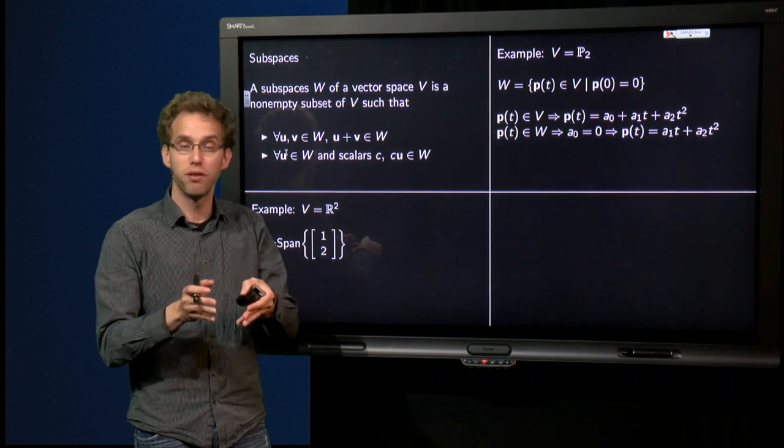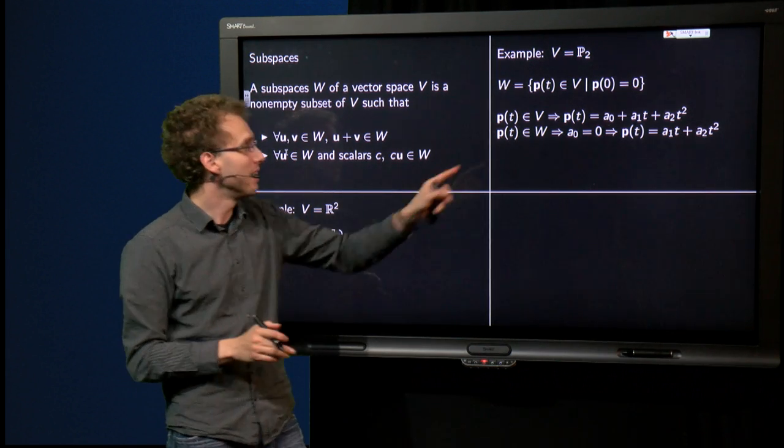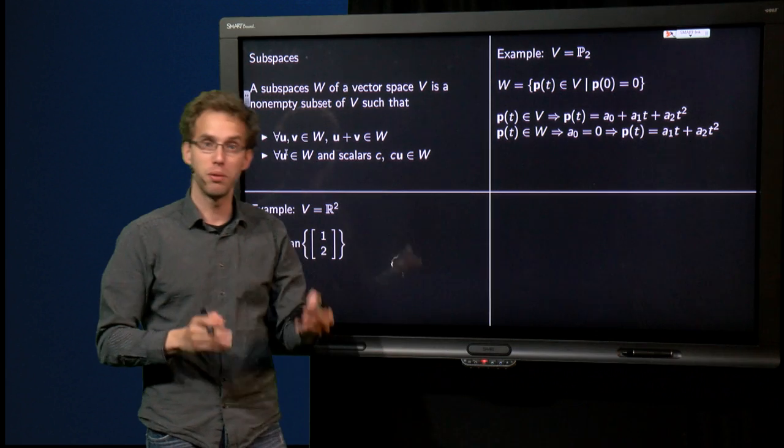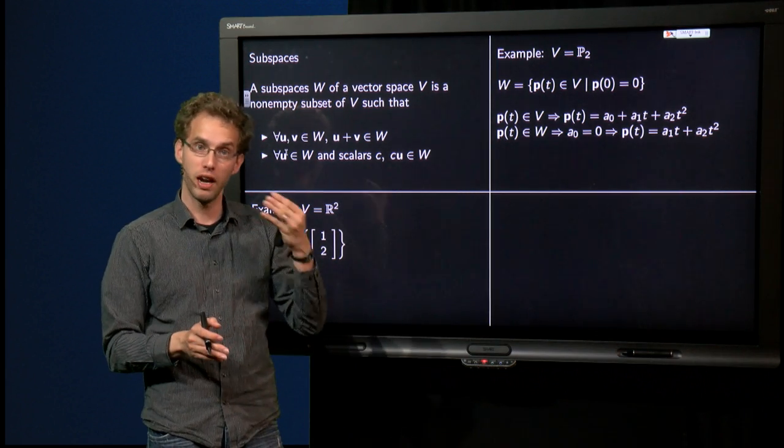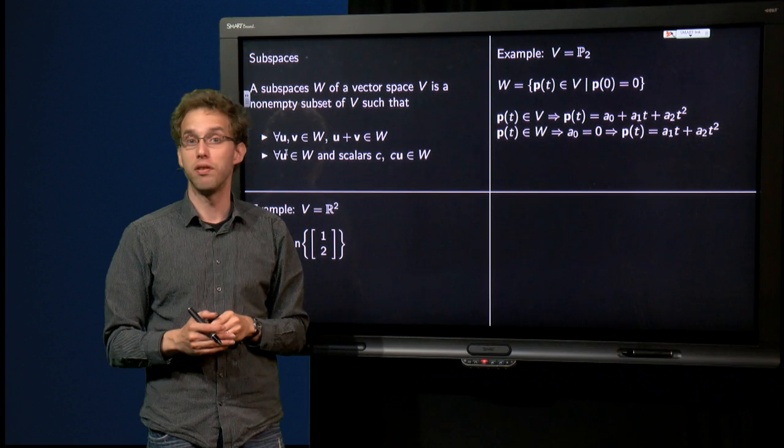Well, you know, if p(t) is in V, then it is of the form a₀ + a₁t + a₂t², where a₀, a₁ and a₂ are free to be chosen.